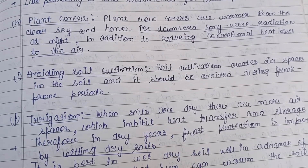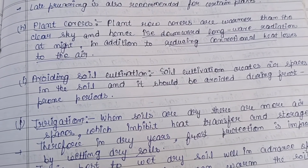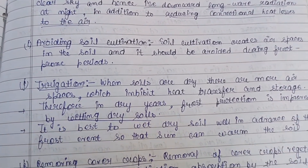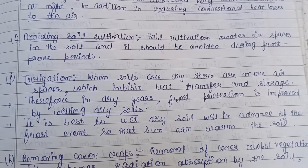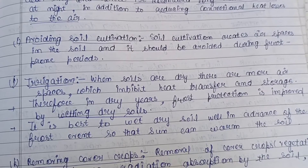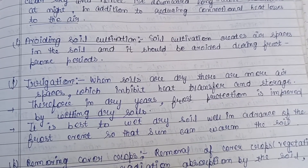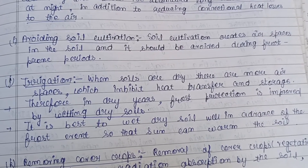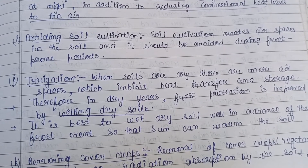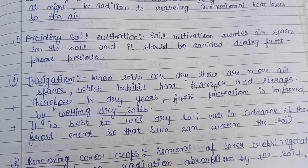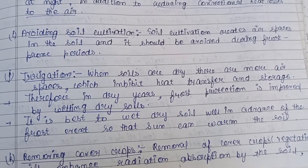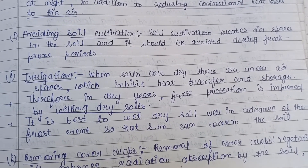Soil cultivation creates air spaces in the soil and should be avoided during the frost period. Regarding irrigation: when soils are dry there are more air spaces that inhibit heat transfer and storage. Therefore, in dry years, frost protection is improved by wetting dry soil in advance of the frost event so the sun can warm the soil effectively.